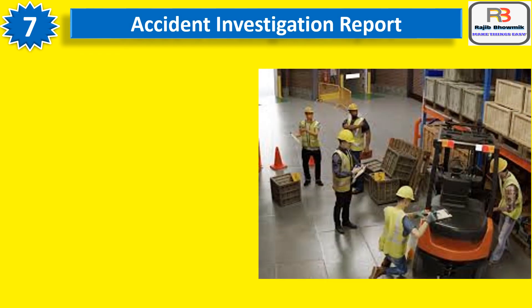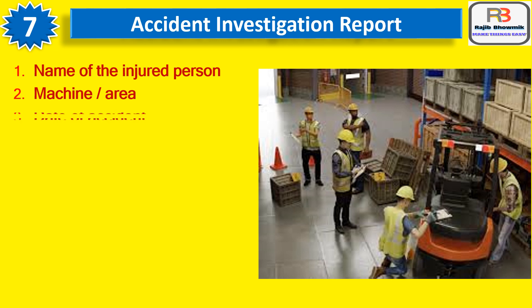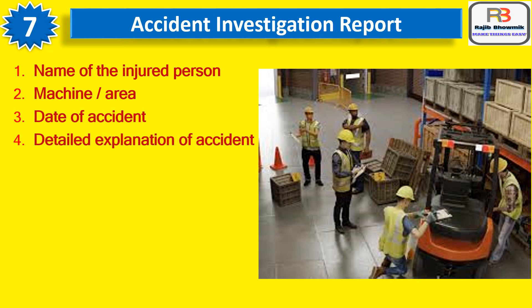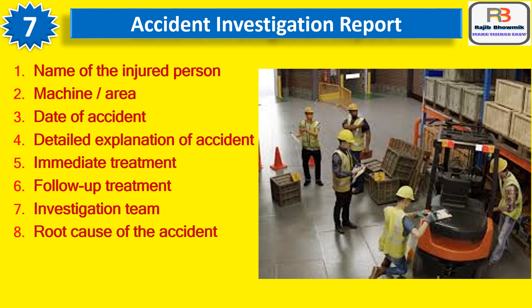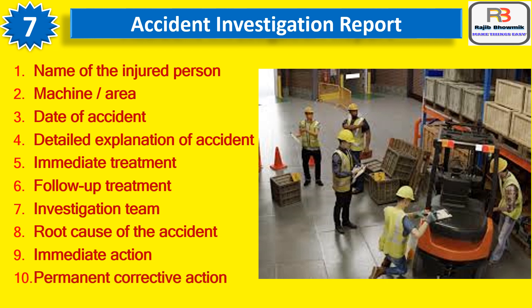Number seven is Accident Investigation Report. After an accident, proper investigation is to be done. A typical investigation report should mention: name of the injured person, machine or area, date of accident, detailed explanation of the accident, immediate treatment, follow-up treatment, investigation team, root cause of the accident, immediate action, and permanent corrective action. Accident details should be displayed in similar areas with photographs so that people become alert for similar types of accidents.